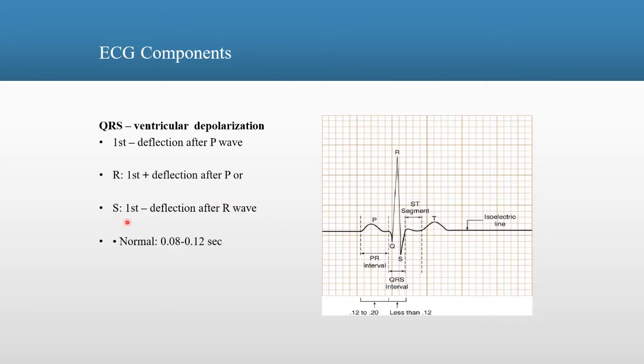The S-Wave is the first negative deflection after the R-Wave. So there's the R-Wave, Q-R-S. The normal range is 0.08 to 0.12 seconds in time.